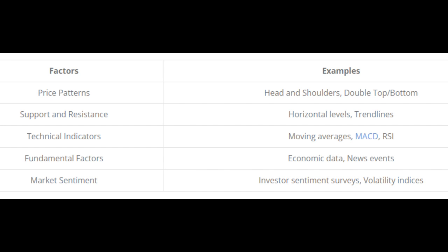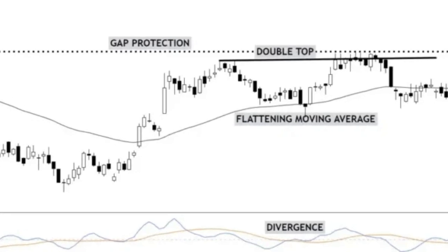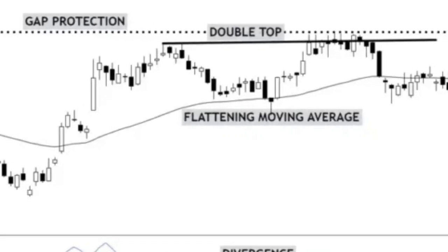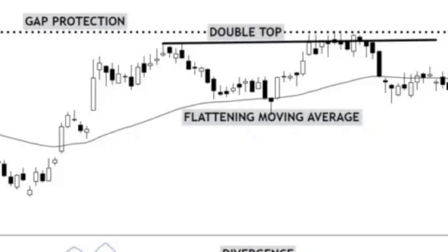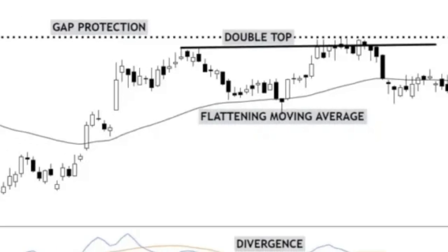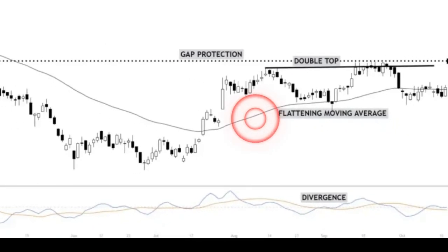To identify confluence, you need to analyze price action and technical indicators. Price action involves looking at the movement of prices on the chart — identifying patterns like support and resistance levels, trend lines, and chart patterns. Technical indicators like moving averages, oscillators, and volume can all further validate whatever decision you're making.